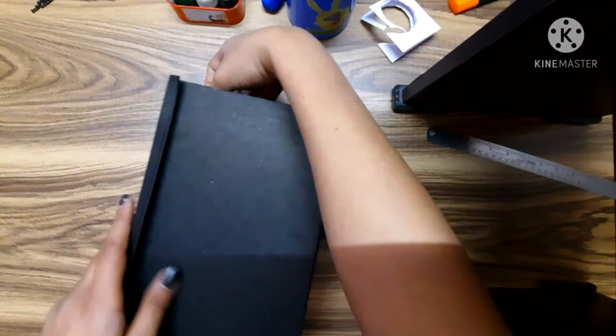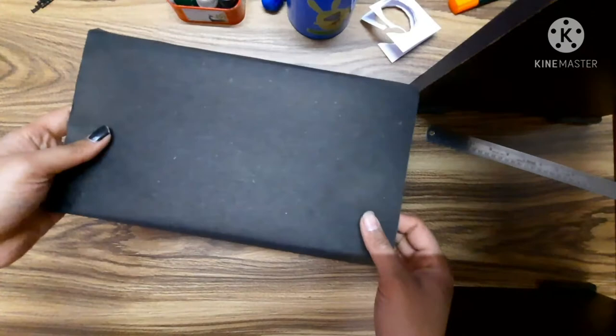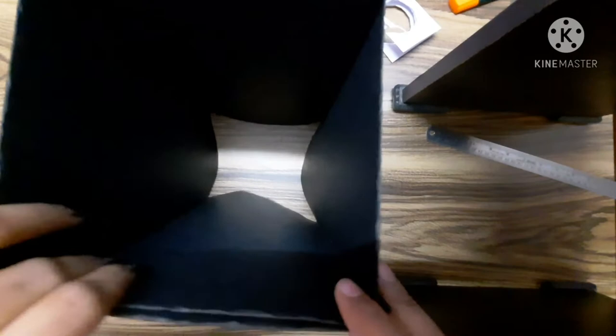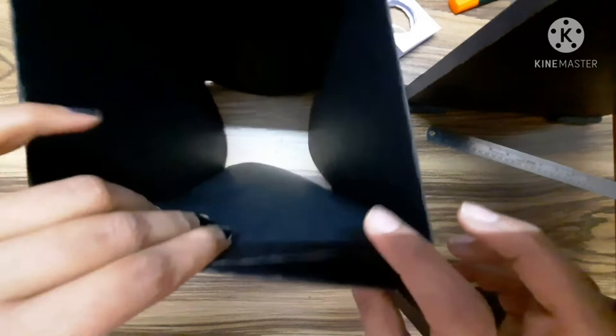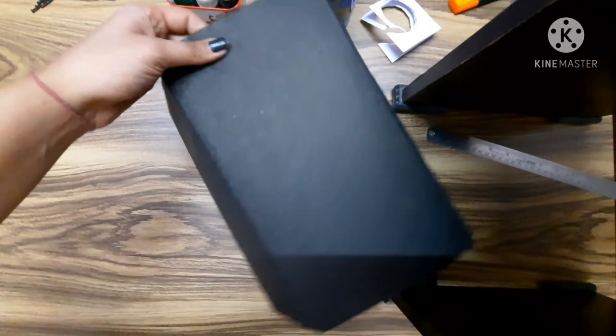Then you can keep it like this, a rectangular box. You can see here a rectangular box. Then you can stick these two papers or you can also staple it with the help of your parents or guardians.